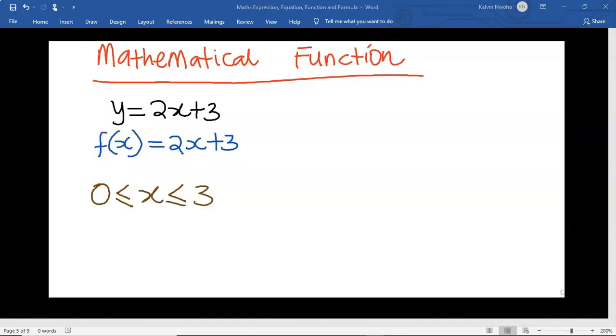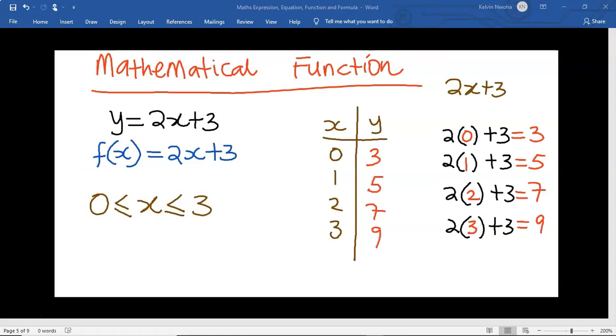Let's assume that x will take values between let's say 0 and 3, inclusively. If we input x equal to 0 in this function, we are going to obtain 3. For x equal to 1, we are going to obtain 5. And for x equal to 2, we are going to obtain 7. For x equal to 3, we are going to obtain 9.